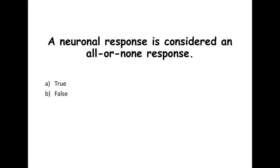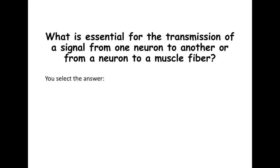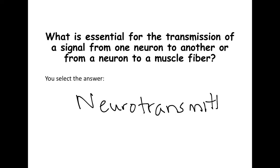A neuronal response is considered an all-or-none response — true or false? This means you either get a response or you don't. If you said true, you are correct. What is essential for transmission of a signal from one neuron to another, or from a neuron to a muscle fiber? If you said neurotransmitter, you are correct. There are different types: in the peripheral nervous system we have acetylcholine, and in the central nervous system we have norepinephrine, dopamine, and serotonin — all essential for transmitting messages.